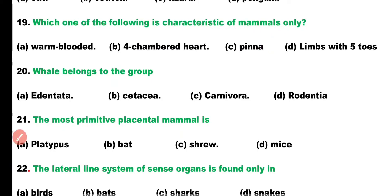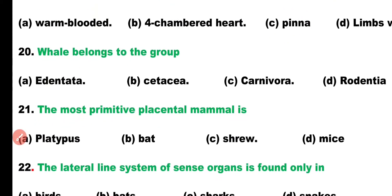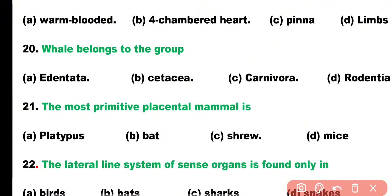Question number 20. Whales belong to which group? Edentata, Cetacea, Carnivora, or Rodentia? Correct answer is Option B. Whales belong to Cetacea order, which is a mammals order.